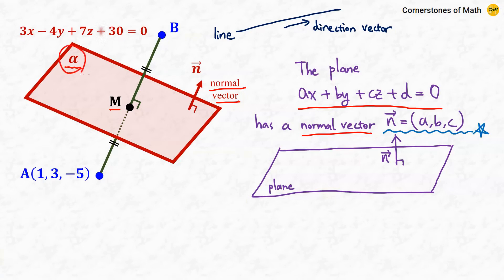Then, for this plane alpha, you can see that the normal vector N is (3, -4, 7), directly from this equation.